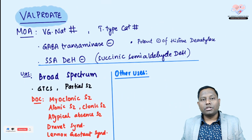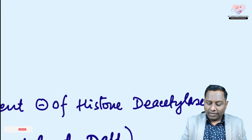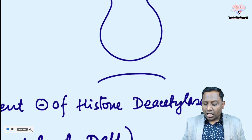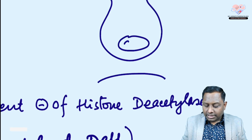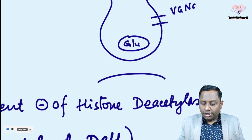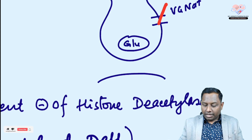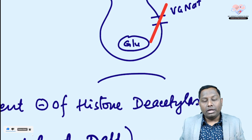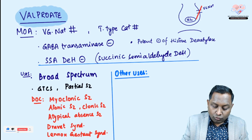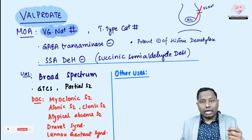First and foremost, you should all know that valproate is a very broad spectrum anti-epileptic drug. On the pre-synaptic neuron of the glutamate synapse there is a voltage-gated sodium channel. The main mechanism of action of valproate is inhibiting the voltage-gated sodium channel. This is the main mechanism of action, but there are other mechanisms through which valproate works as well.